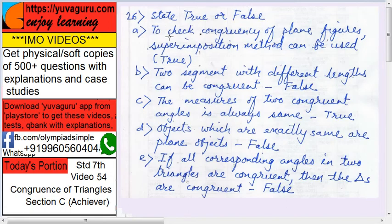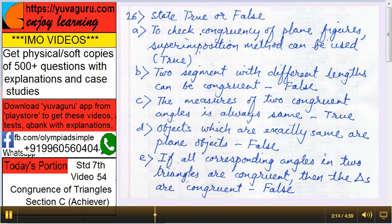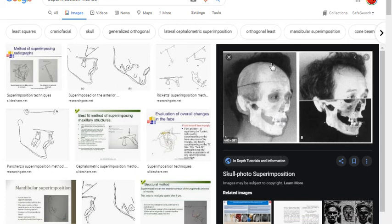State true or false. To check the congruency of plane figures, superimposition method can be used. That is true. What is superimposition? See, this is superimposition. You put one thing on another.